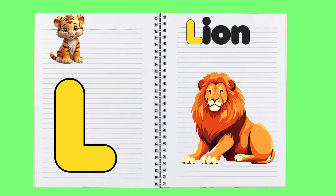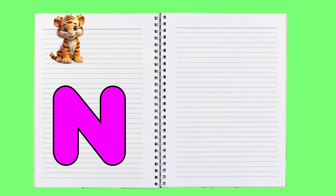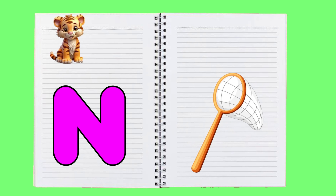M is for mat, m-m-mat. N is for net, n-n-net.